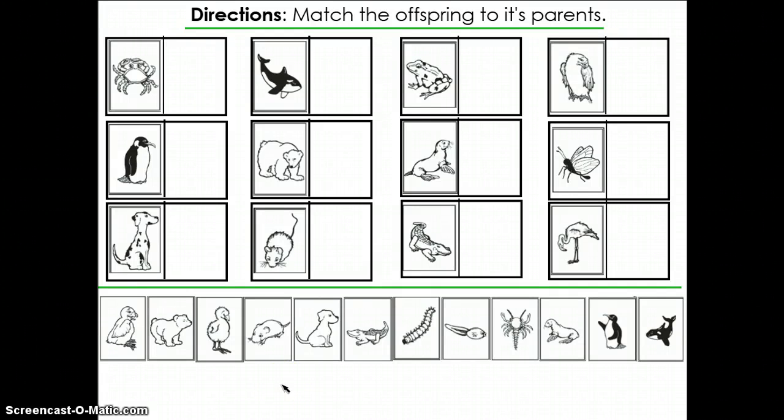Over the past week we've been talking a lot about animal characteristics, and today's activity you needed to look at animal characteristics to match the adult animal with its offspring. So with your paper in front of you, let's go ahead and check and see how you did.